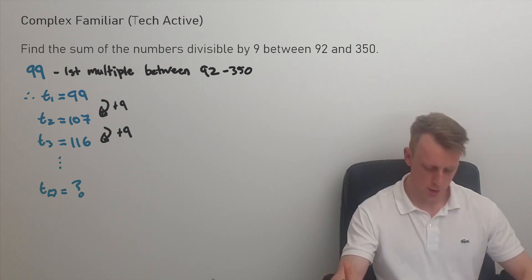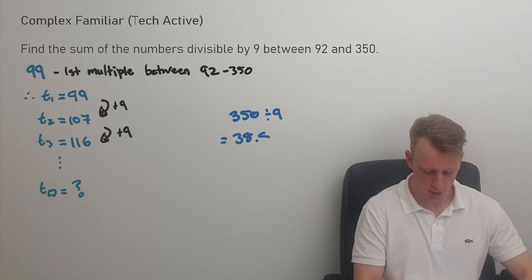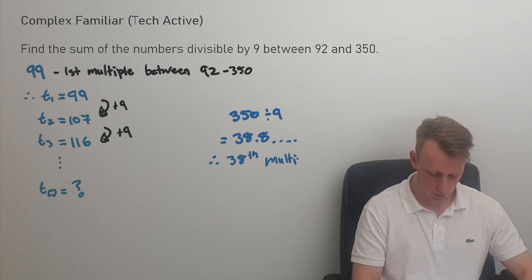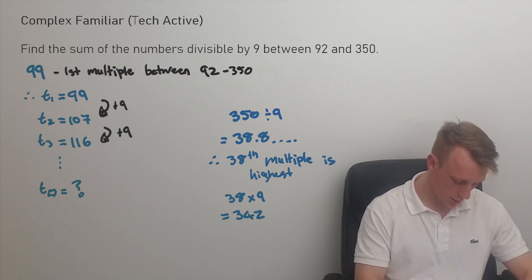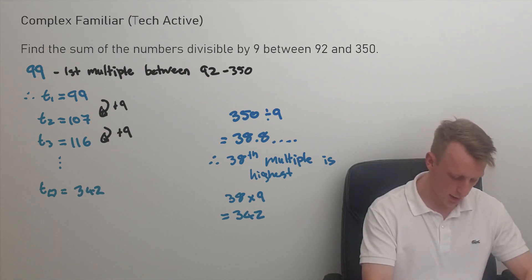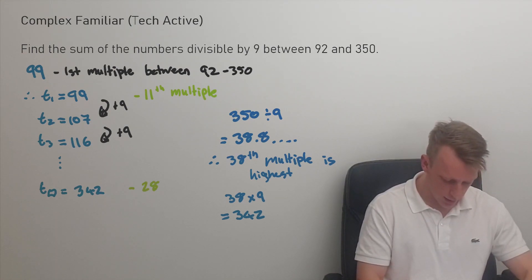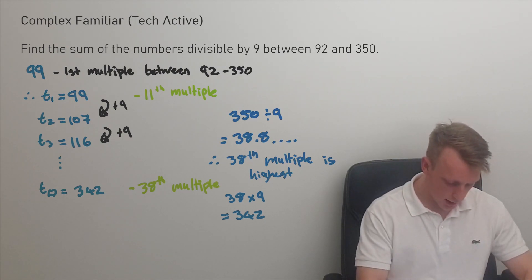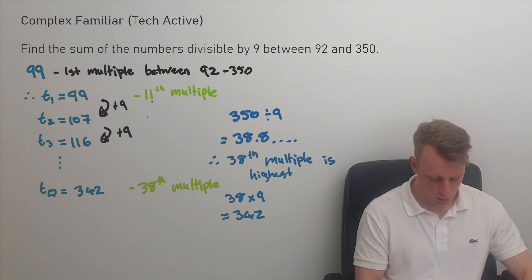We're subject to the constraint of numbers between 92 and 350. To find the highest multiple of nine within this range, divide 350 by 9 in the calculator to get approximately 38.8, so the 38th multiple is the highest — that's 38 times 9 equals 342. The number 99 is the 11th multiple of nine and is the first term, and 342 is the 38th multiple. Since the 11th multiple is the first term and the 38th multiple corresponds to the 28th term, n equals 28.